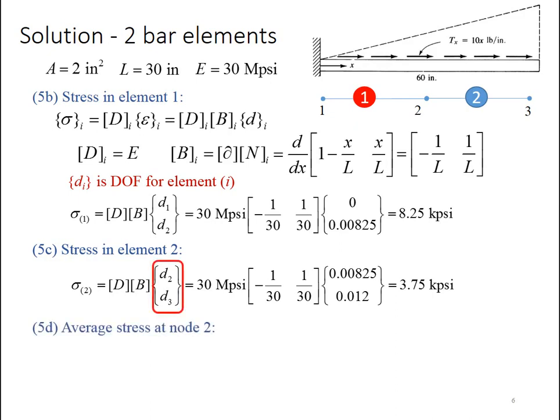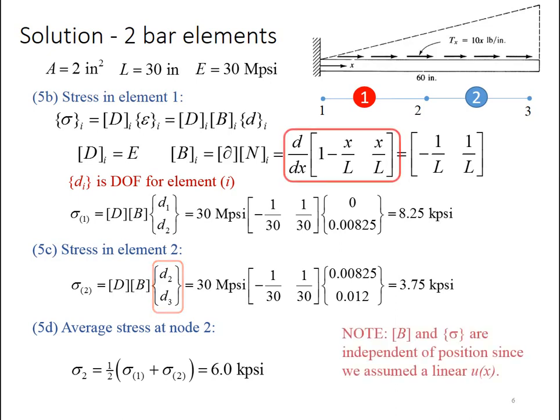The average stress at node 2. Remember, FE codes use nodal averaging, so let's apply that process here. That's simply going to be the average of the stress reported by element 1 at node 2 and the stress reported by element 2 at node 2, which comes to a total of 6 kpsi.